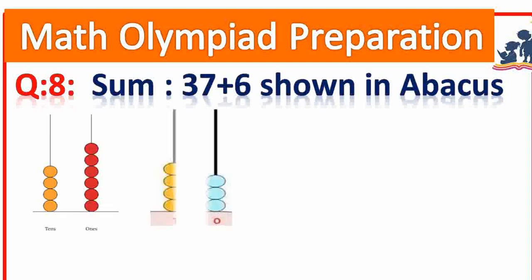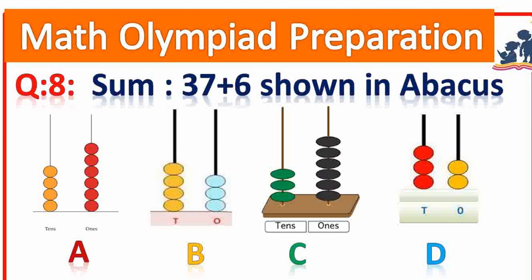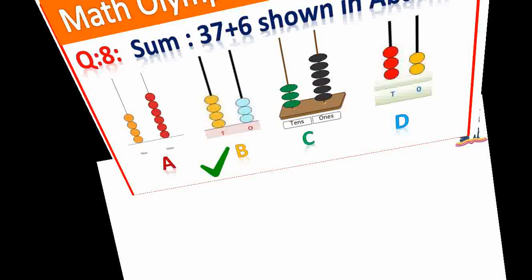Question number 8. Sum of 37 plus 6 shown in Abacus. Tell me the answer. Answer B: 43. Very good.